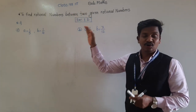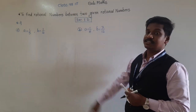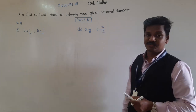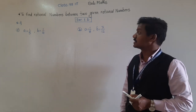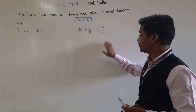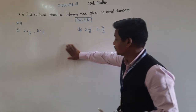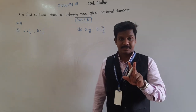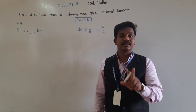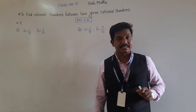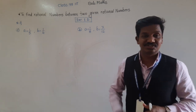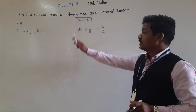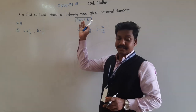We are going to learn the concept through Exercise 1D. There are two methods to find rational numbers between two given rational numbers, and we will cover both in Exercise 1D.